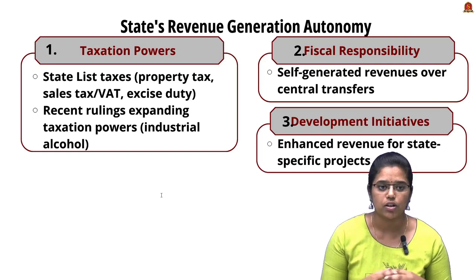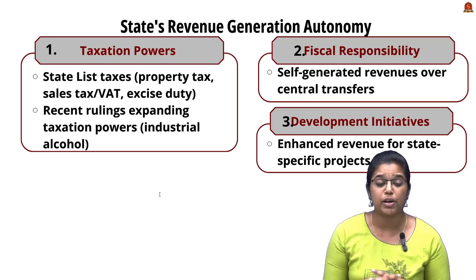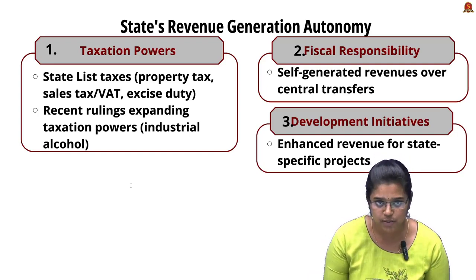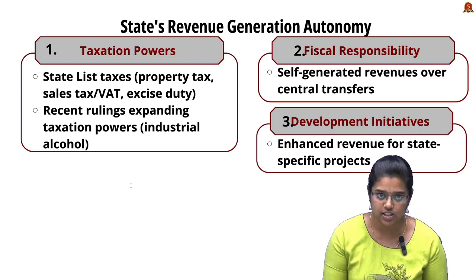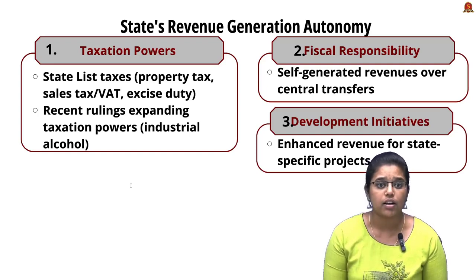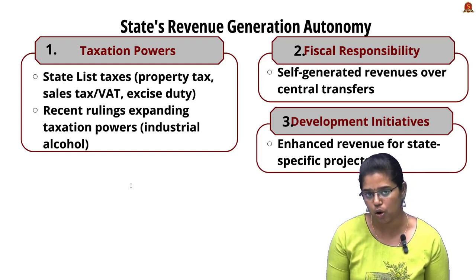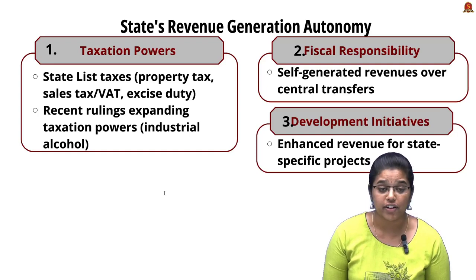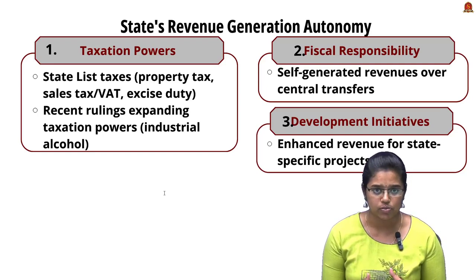Methods for states to improve revenue generation independently include: taxation powers — states can impose taxes on items in the State List such as property tax, VAT, sales tax, excise duty on alcohol, and now industrial alcohol based on the current ruling; focusing more on self-generated revenues rather than central transfers to maintain fiscal health; and enhancing revenue independence by supporting local development projects and welfare programs specifically designed to meet the needs of the state.